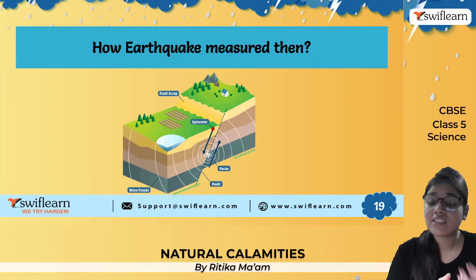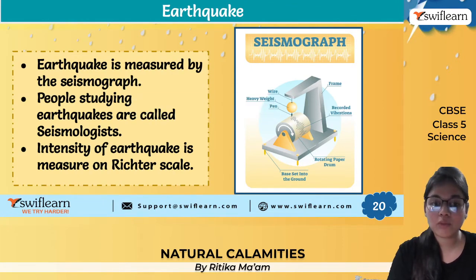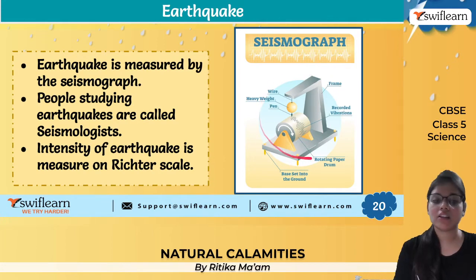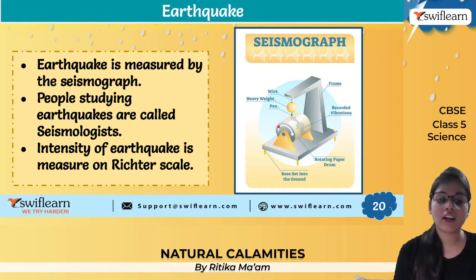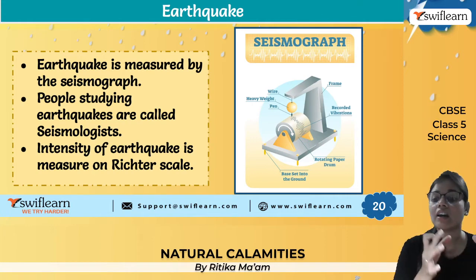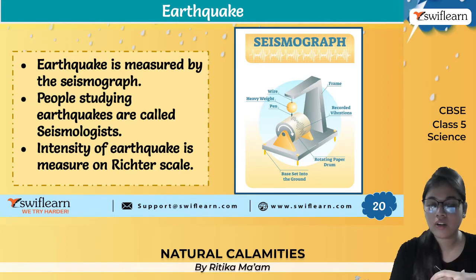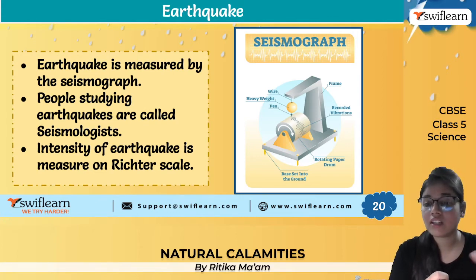How do we measure an earthquake — how do we know how hazardous it was? It is measured by a device known as a seismograph. The scientists or people who study earthquakes are known as seismologists. The intensity — meaning the level of destruction created — is measured on a scale known as the Richter scale. The Richter scale has numbers, and the number assigned tells us how hazardous the earthquake was.